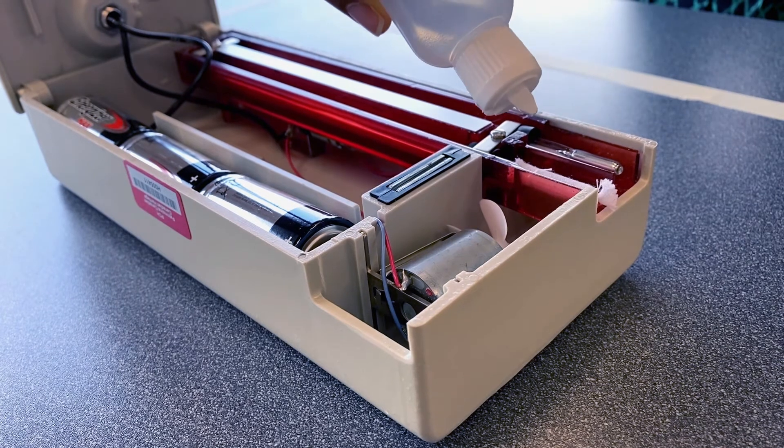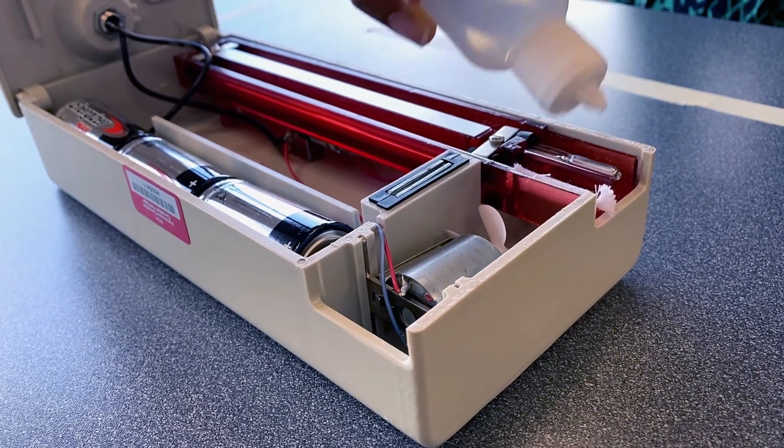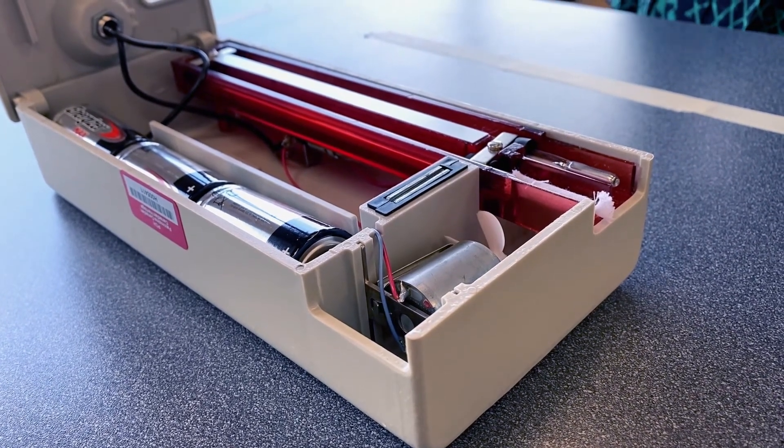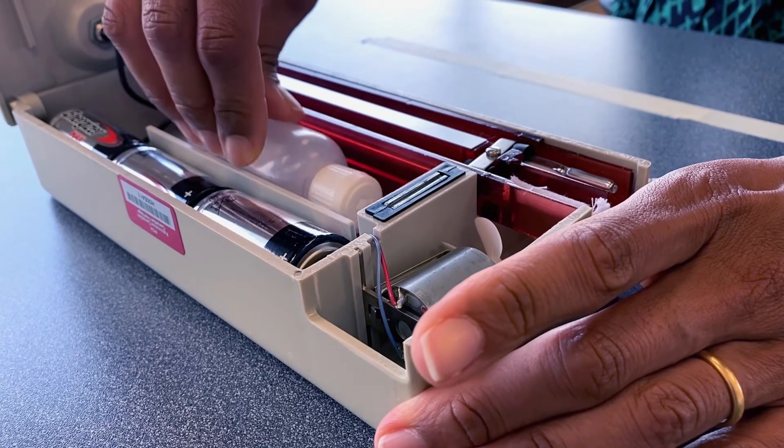Add one drop at a time to the wet bulb sock until it is saturated. Return the bottle to its storage location and close the cover.